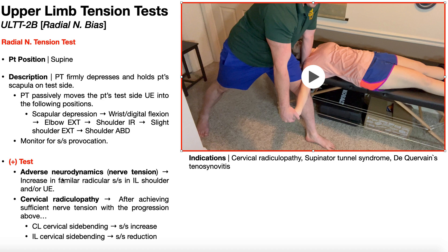A positive test is just going to be an increase in familiar nerve symptoms in the ipsilateral shoulder and/or upper extremity — basically her right arm. As long as she's feeling nerve tension, she's got some degree of adverse neurodynamics.